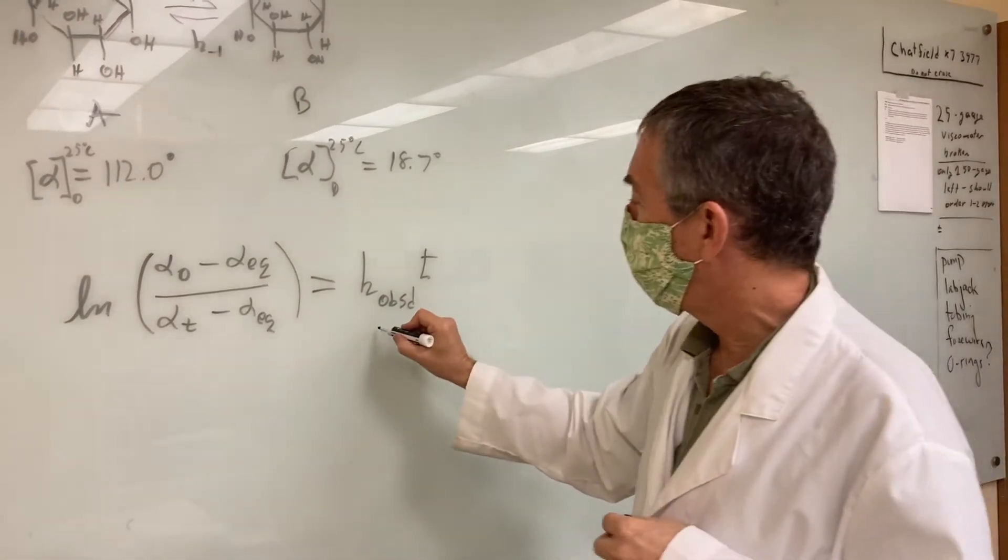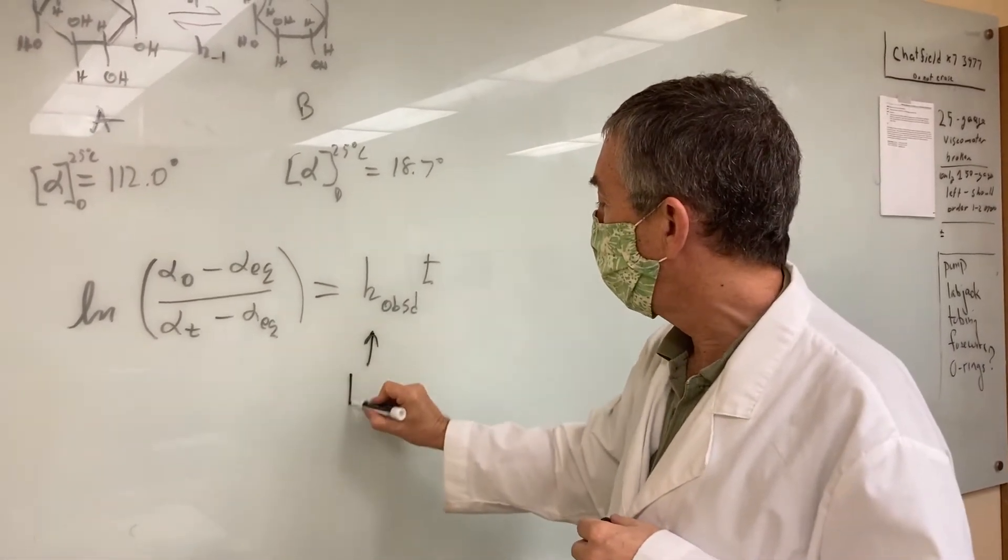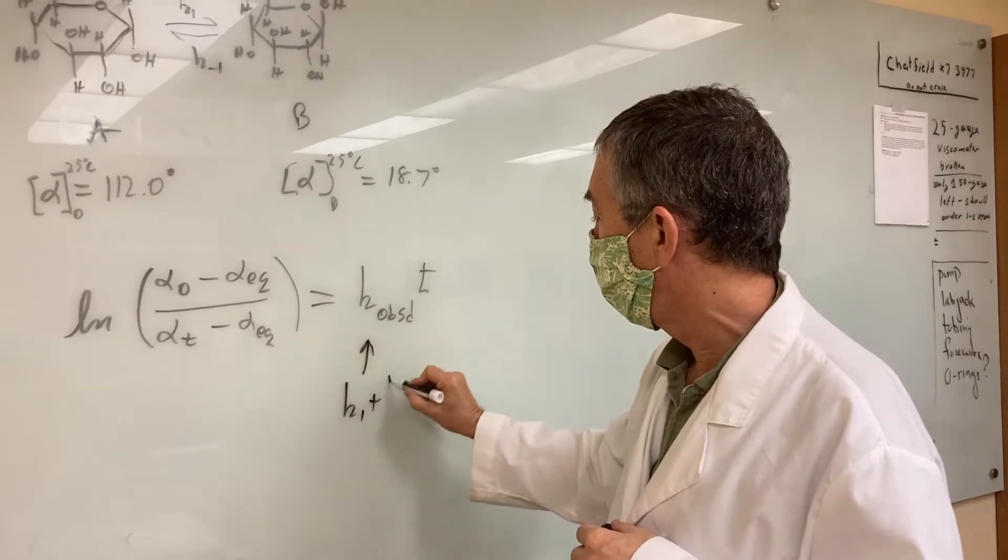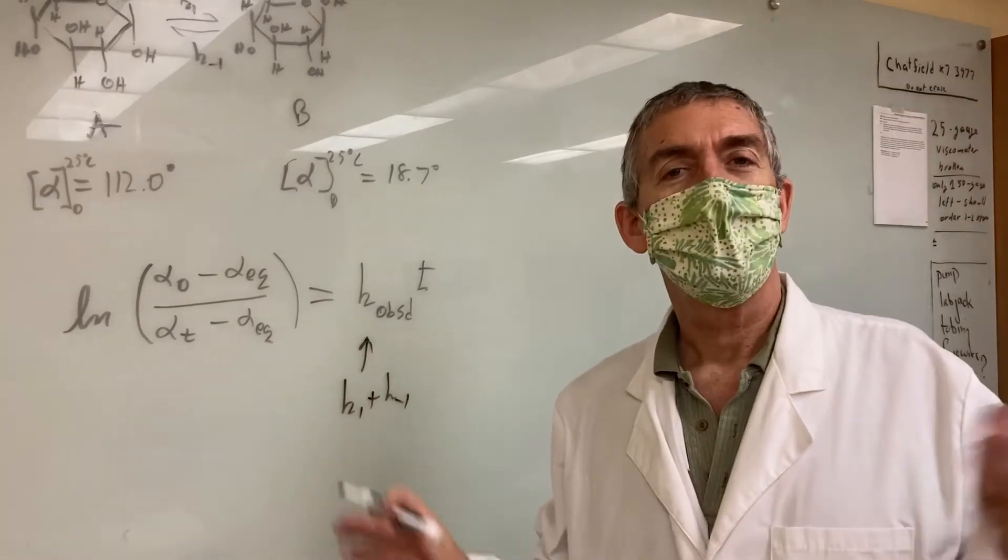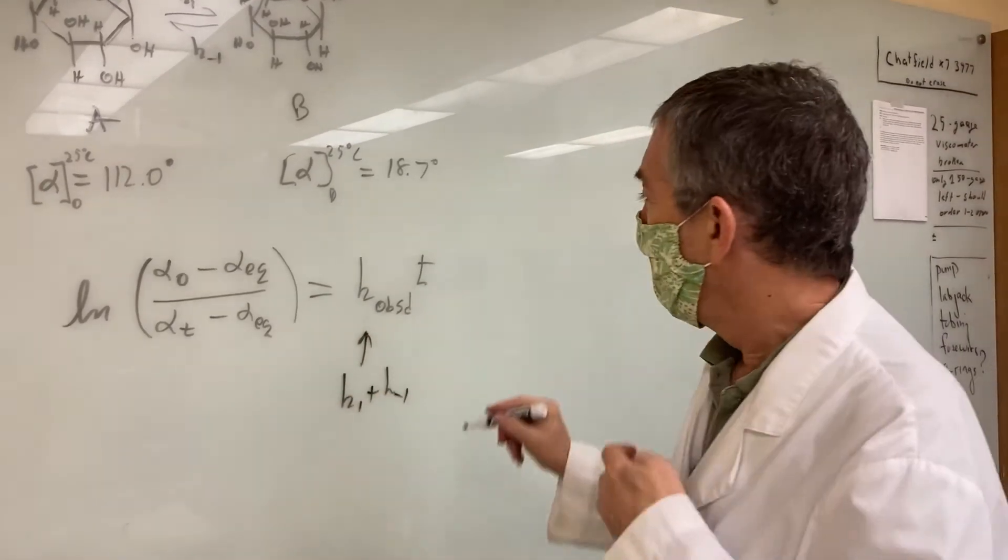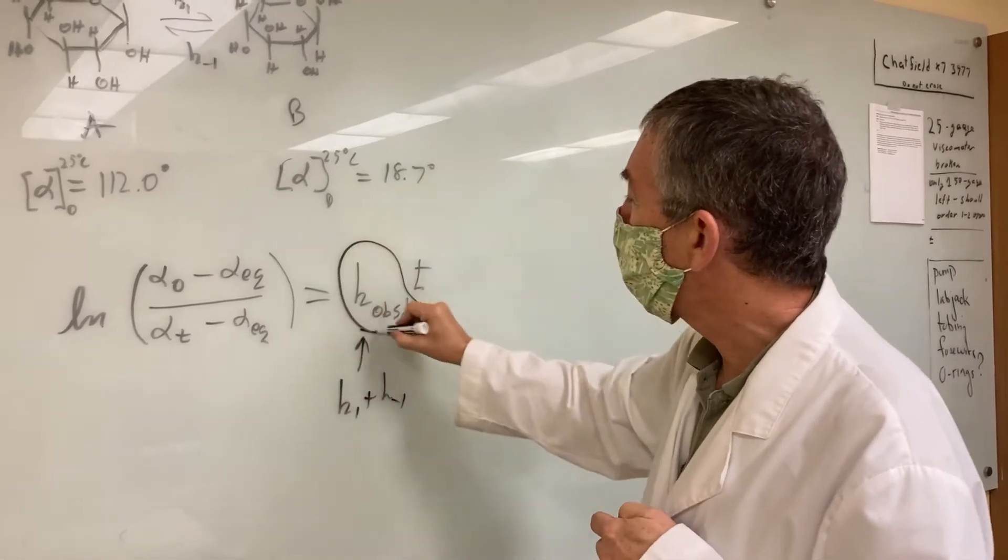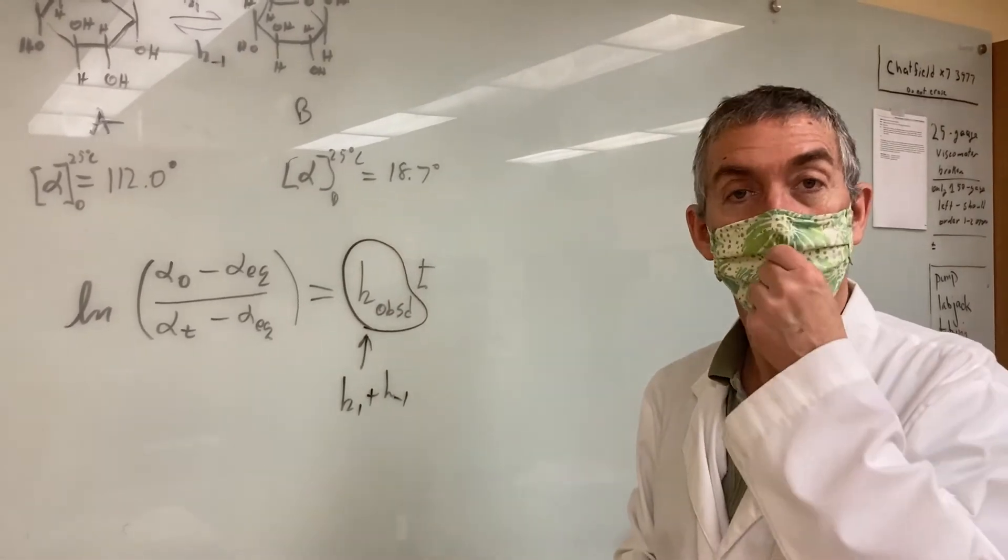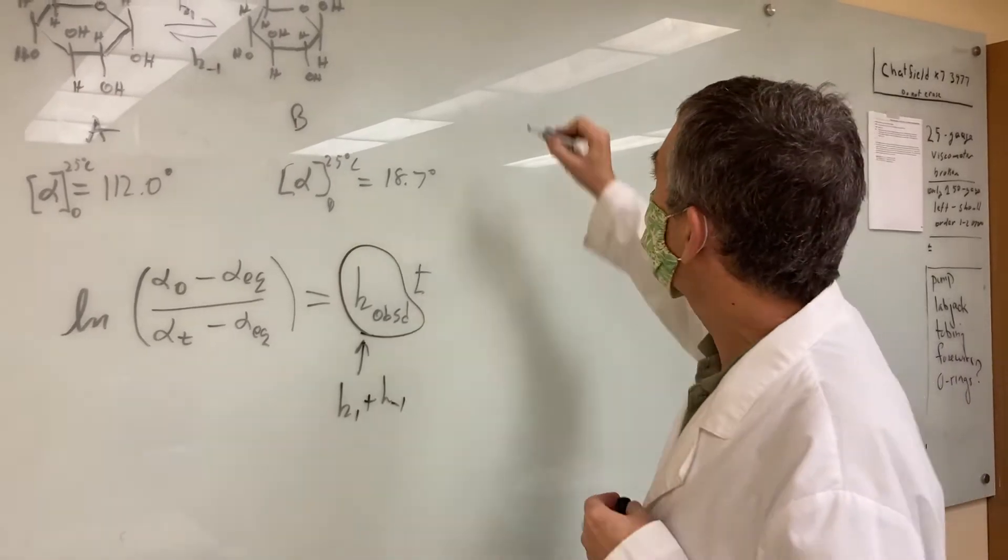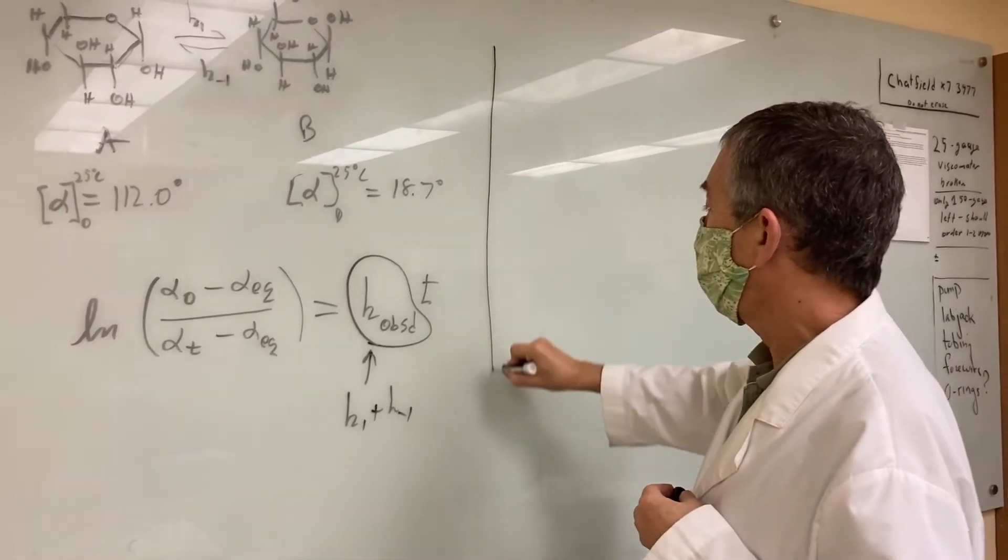k observed is a rate constant, but it really is a combination of these two. Read the theory to see why. All we can really measure, or we're interested anyway, is k observed. So that's kind of the beginning.